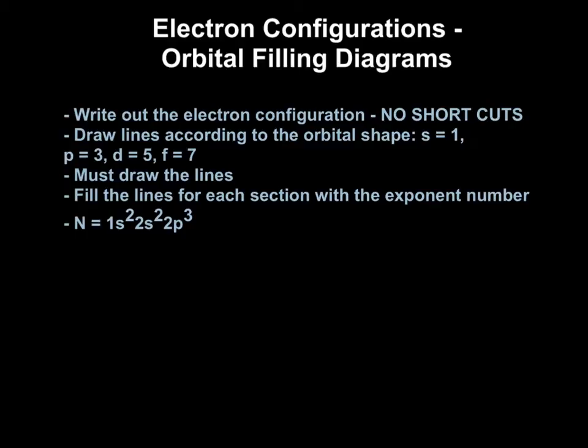So for an orbital filling diagram, what we're doing here is we're showing the electron configuration and also how the electrons are spinning. Recall that in the quantum number we had the spin number, and that was either positive one-half or negative one-half, and that indicated whether the electrons were spinning in a clockwise direction or in a counterclockwise direction. The orbital filling diagram is the way that we demonstrate that using an electron configuration. So here are the rules. You need to write out the electron configuration. No shortcuts. This one calls for the full electron configuration. Then you draw lines according to the orbital shape. So if we have an S orbital, you draw one line. P orbital, you draw three lines. A D orbital, you draw five lines. And an F orbital, you draw seven lines. And you must draw all the lines, whether there are electrons in these positions or not. You fill the lines in for each section with the exponent number.